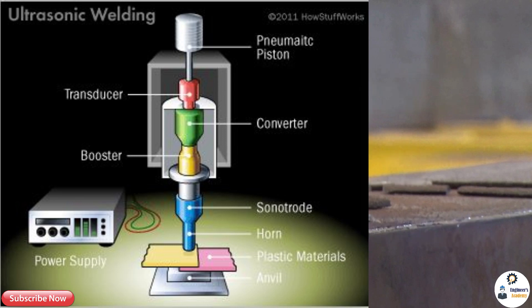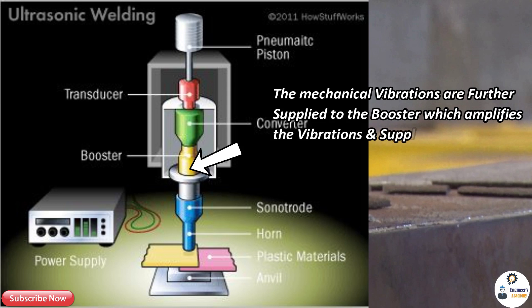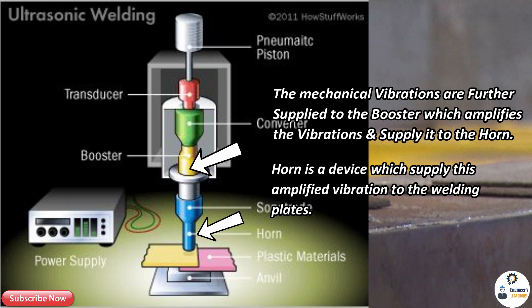Third is the booster and horn. The mechanical vibration created by the transducer is supplied to the booster, which amplifies this vibration and supplies it to the horn. The horn is a device which supplies this amplified vibration to the welding plates.